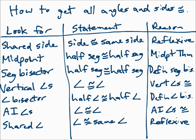If the triangles share a side, make that side congruent to itself with the reflexive property. If there's a midpoint, then make the half segment congruent to the other half segment with the midpoint theorem. If there's a segment bisector, make the half segment congruent to the other half segment — that's the definition of a segment bisector. If you have vertical angles, make the angles congruent because vertical angles are congruent. If you have an angle bisector, make the half angle congruent to the other half angle because of the definition of an angle bisector.